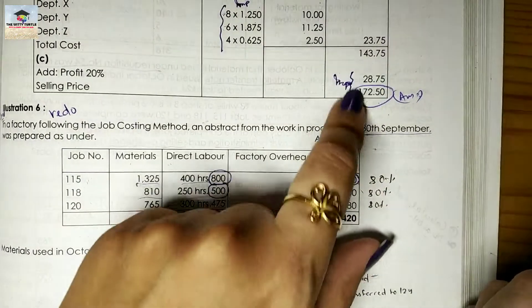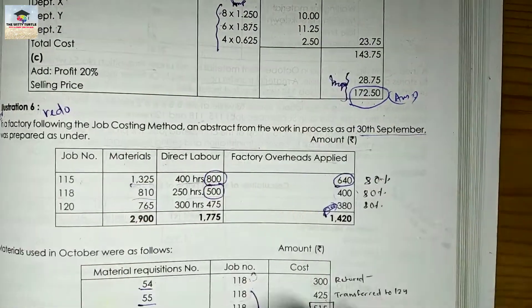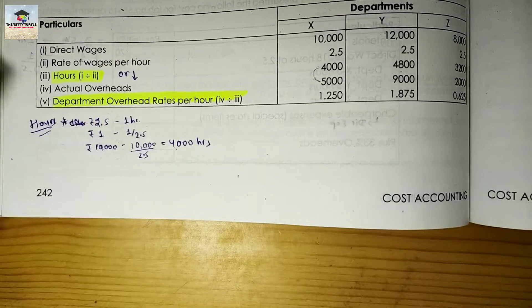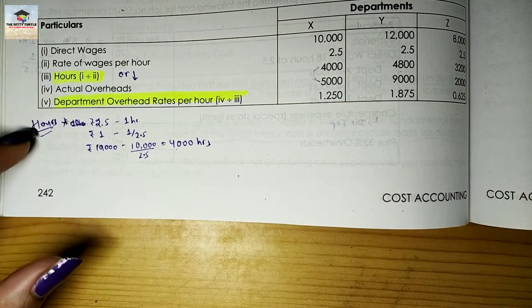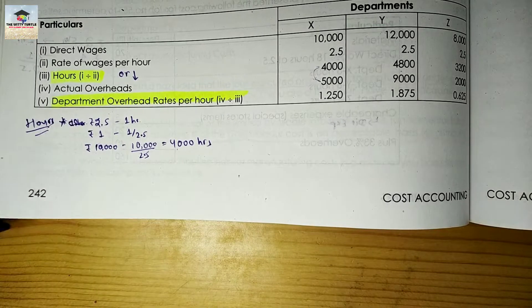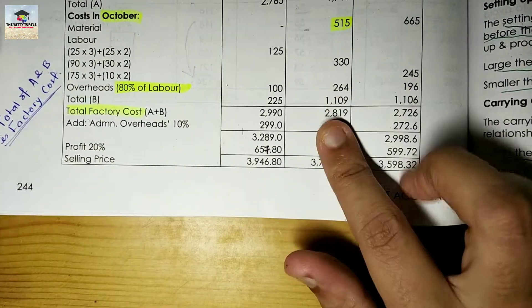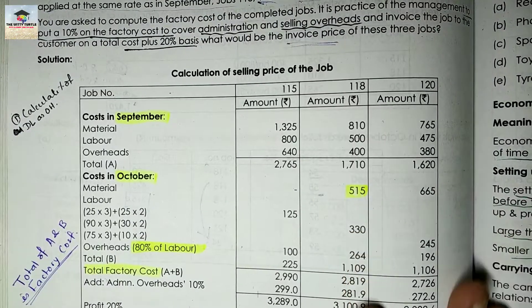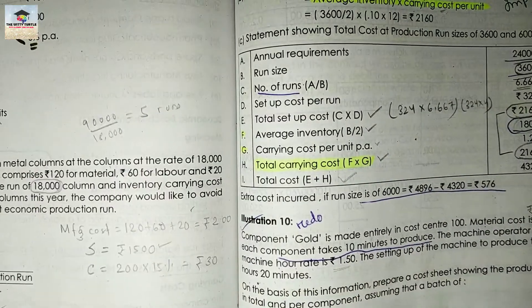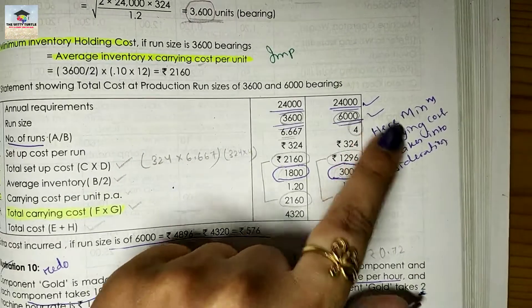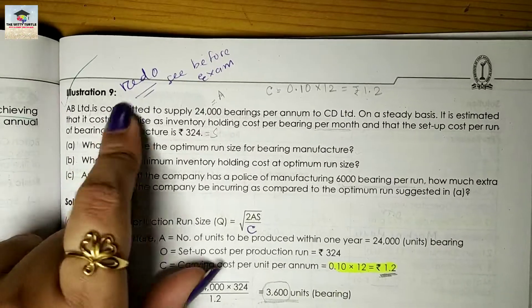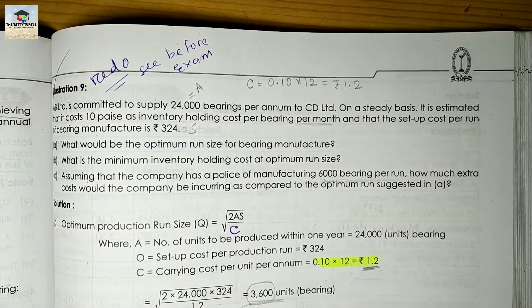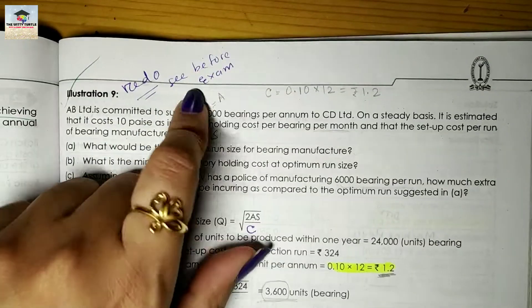For marking important points in your book — like this part which is very important — I write 'Important' right there. Where I was repeatedly making a calculation error, I wrote a full explanation of that particular step directly on the book. Similarly, for questions I got wrong the first time, I wrote 'Redo and see before exam' — so during final revision you can go through only these marked points.